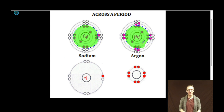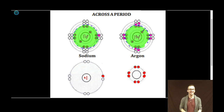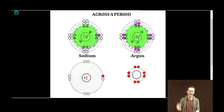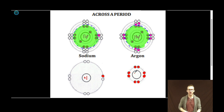Argon, on the other hand, has 18 positive charges in its nucleus and 10 inner level electrons. So 18 positive charges, 10 negative charges — an overall core charge of plus eight.